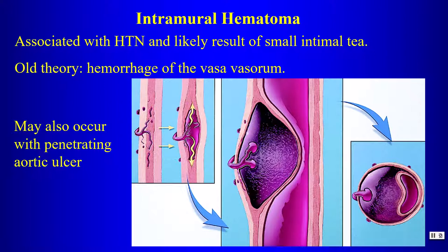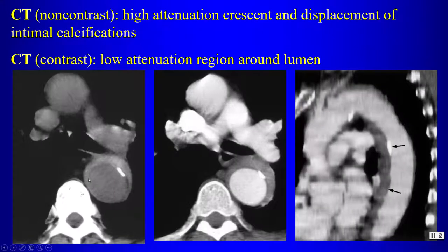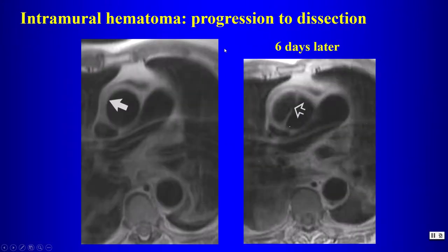At surgery and autopsy, most cases of intramural hematoma have a small intimal tear. An older theory was that this represented hemorrhage of the vasa vasorum within the aortic wall. Intramural hematomas can also be seen with penetrating aortic ulcers. On non-contrast CT, we see the high attenuation crescent and displacement of intimal calcification. On T1-weighted MRI, high signal represents acute intramural hematoma. Intramural hematomas are treated as dissection equivalents and sometimes resolve on their own.